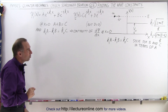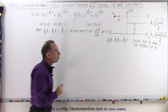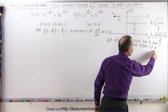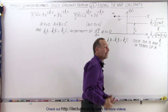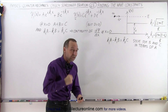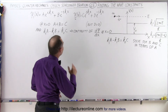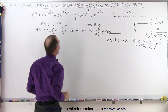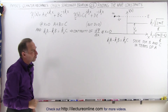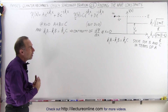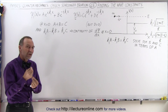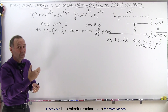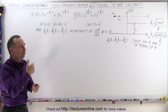Now using those two equations, we're going to solve for b and for c in terms of a. That way we have only one single constant, a, which can be used in both wave functions. This will allow us to find the percentage of the particles that get transmitted and the percentage that get reflected.